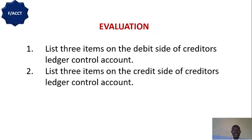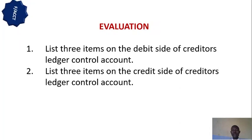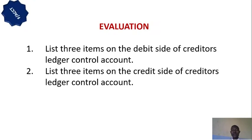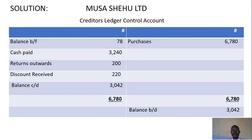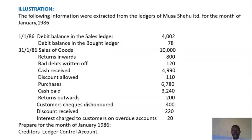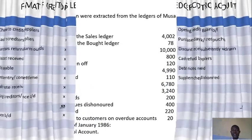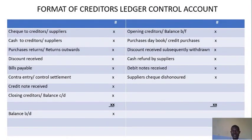For the credit side of Creditor's Ledger Control Account, we have: balance brought forward of creditors or opening creditors at the beginning, credit purchases, discount received subsequently withdrawn, refund from supplier, and debit notes received. From the format, you can pick the items — that is why it is important to know the format of Creditor's Ledger Control Account, also known as Bought Ledger or Purchases Ledger Control Account.